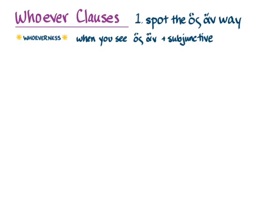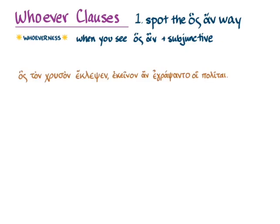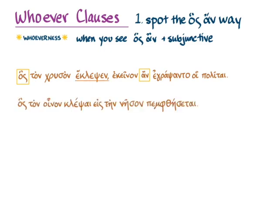Now the 'Spot the Hoss-an' method starts to fail when you run into sentences where you can see the hoss and the an, but the an isn't within the same clause as the relative pronoun, and the verb with the relative clause isn't the subjunctive. Or if you see the relative pronoun but there's no an anywhere, and you notice that the verb with the relative pronoun is optative — and you realize something's going on that's not a normal relative clause. You are still seeing the whoever-ness there, and that's when I turn to other ways.